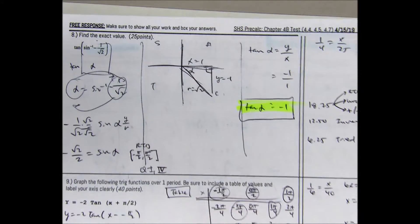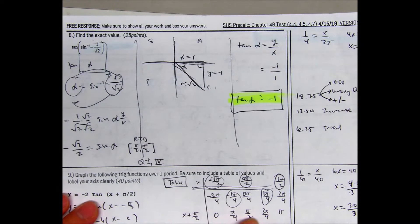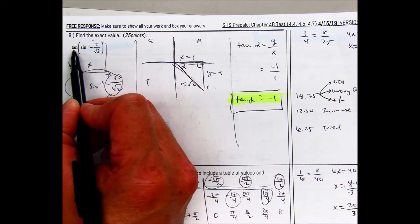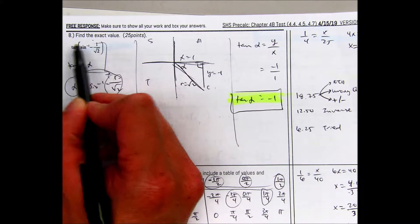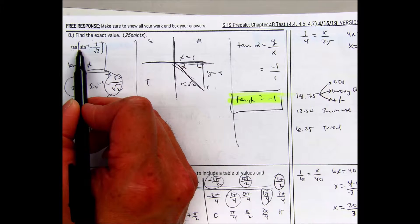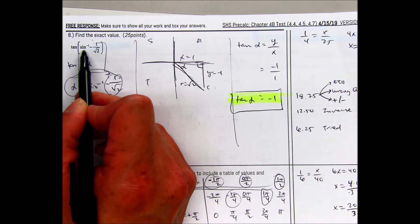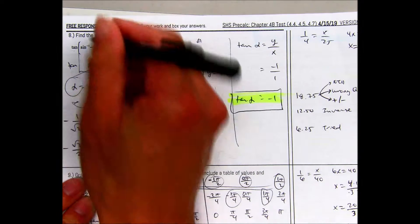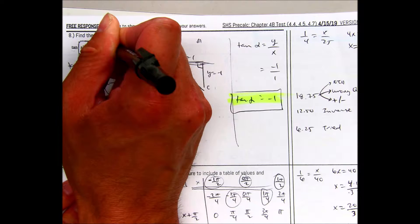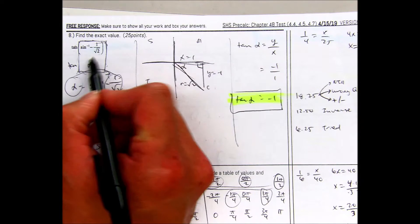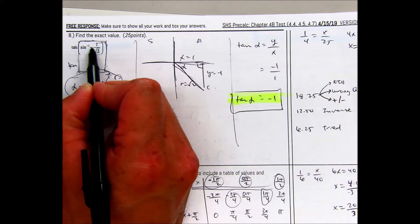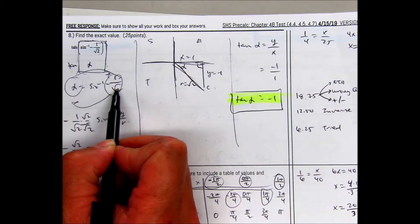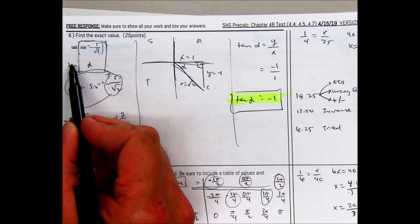Now the back side. Find the exact value: tangent of the inverse sine of negative 1 over radical 2. We can take the inner part and call it alpha. So alpha equals the inverse of sine of negative 1 over radical 2. The end result is finding tangent of alpha.